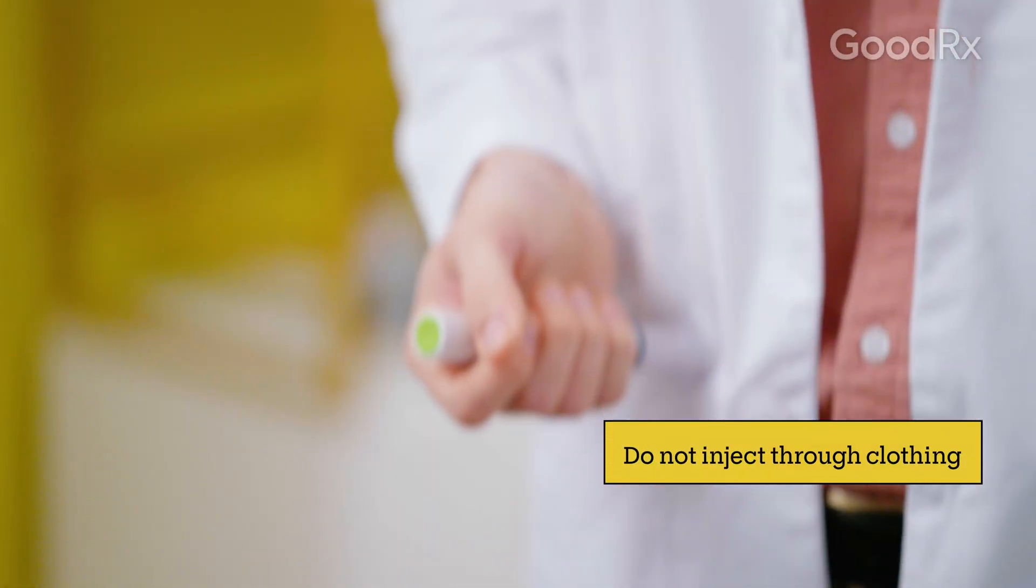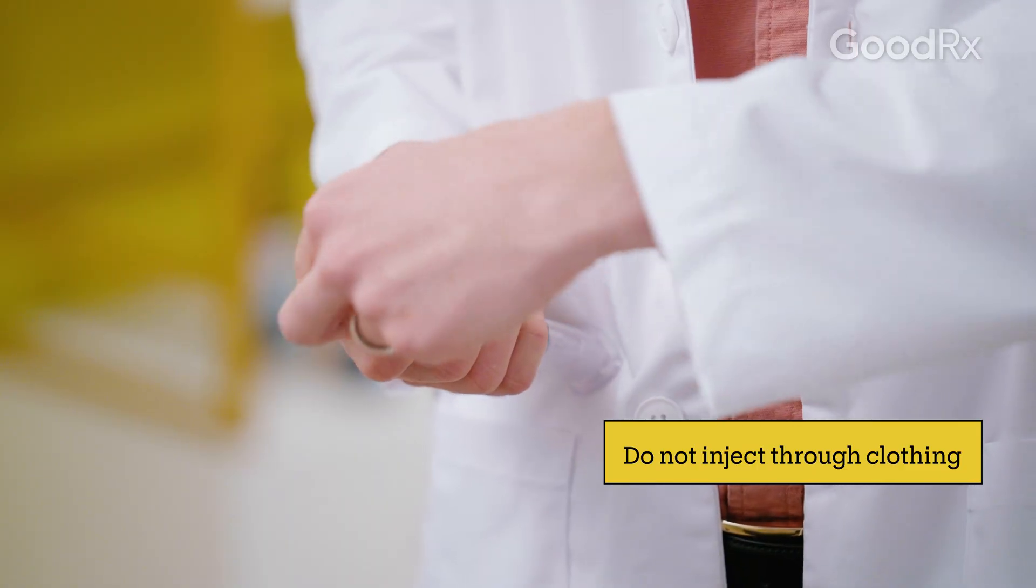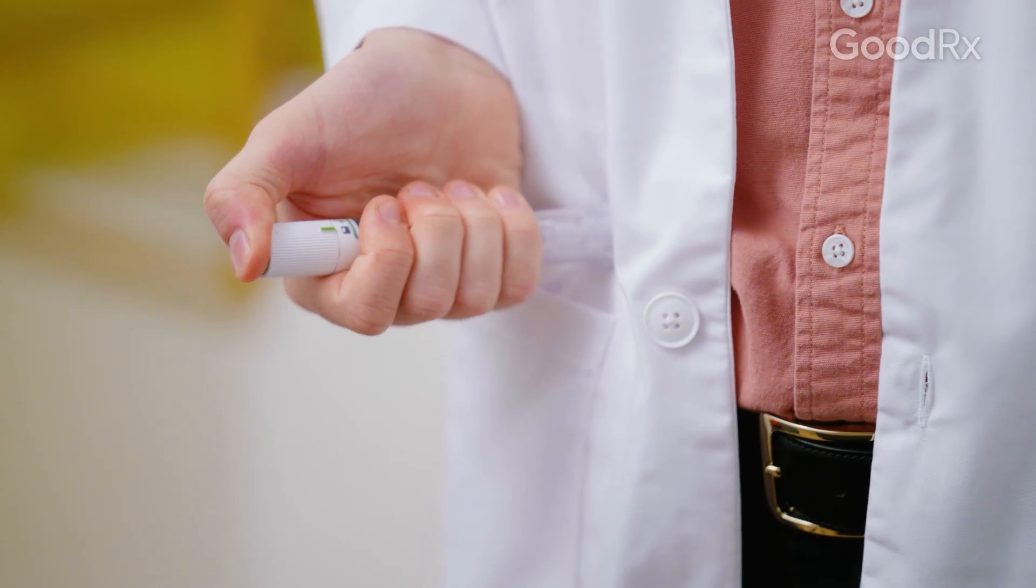Place the clear base against your skin at the injection site and unlock the pen by turning the lock ring. Press the base against your skin and hold the injection button for several seconds. You should hear a click, which means the injection has started.